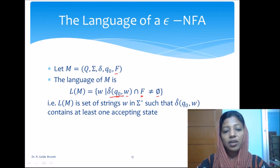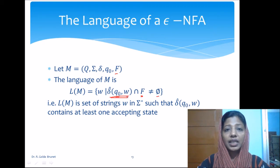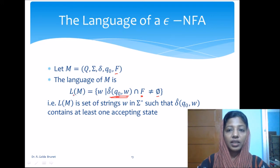the result of delta cap should at least have one of the states from F. So that is the set of strings accepted by the epsilon-NFA. This is very similar to